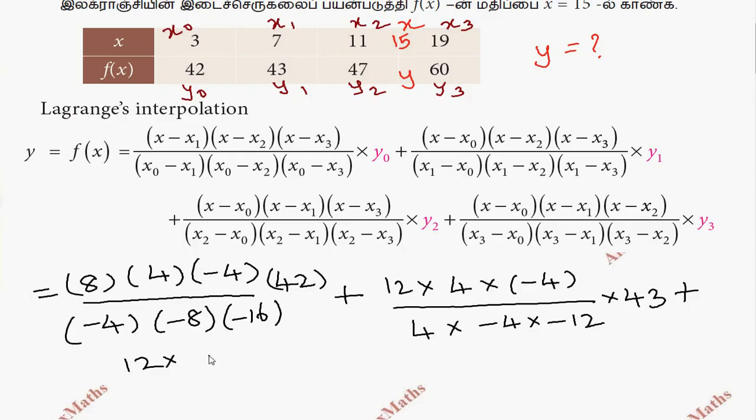The third term: (x minus x naught)(x minus x1)(x minus x3) divided by (x2 minus x naught)(x2 minus x1)(x2 minus x3) times y2. Substituting values: (15 minus 3)(15 minus 7)(15 minus 19) equals (12)(8)(minus 4) divided by (11 minus 3)(11 minus 7)(11 minus 19) equals (8)(4)(minus 8), then multiply by y2 which is 47.